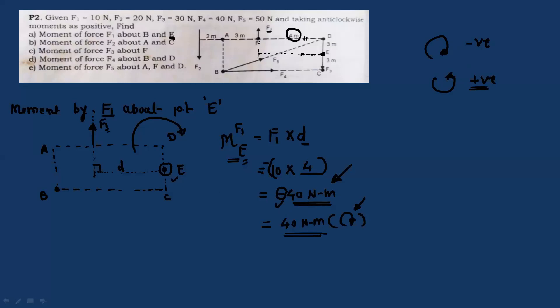Similarly, you can try the remaining points B and C. Now refer to the last case: we find the moment by force F5 about points A, F, and D. First observe force F5, whose magnitude is 50N, acting exactly at point B.